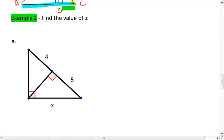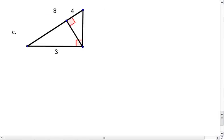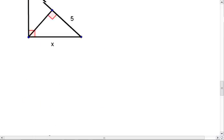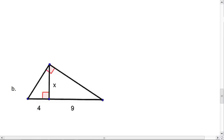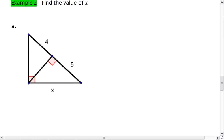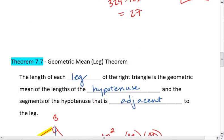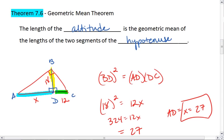In example two, you're given three different triangles. I want you to use theorems that you know in order to solve for the missing value x. So in this first one, first I want to make a quick note that the difference between 7.6 and 7.7, these two theorems. 7.6 deals with the altitude and the hypotenuse. So if you're working with an altitude, most likely you're using 7.6.